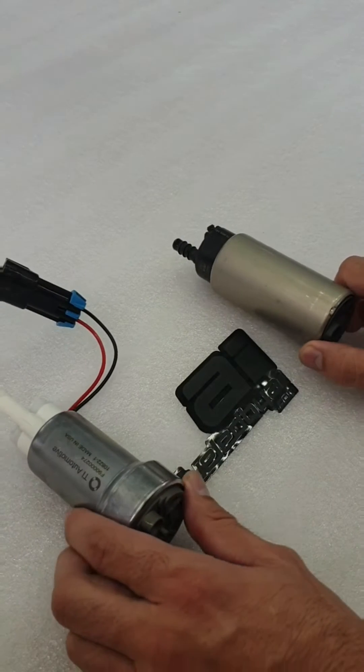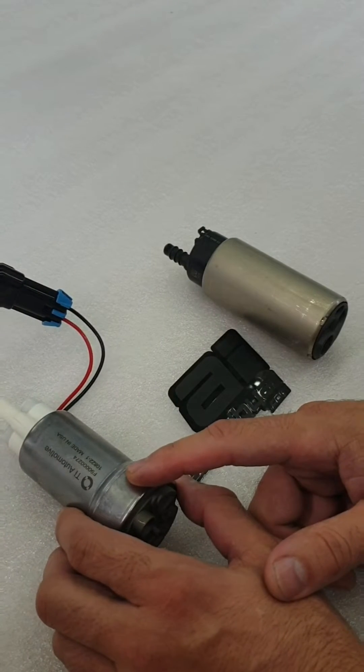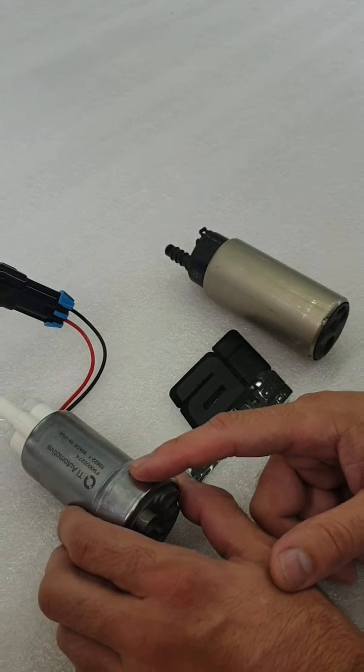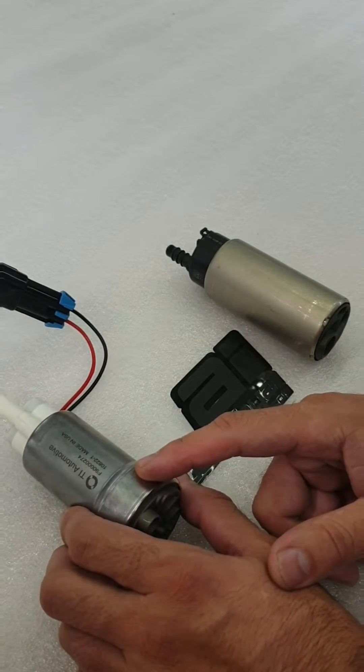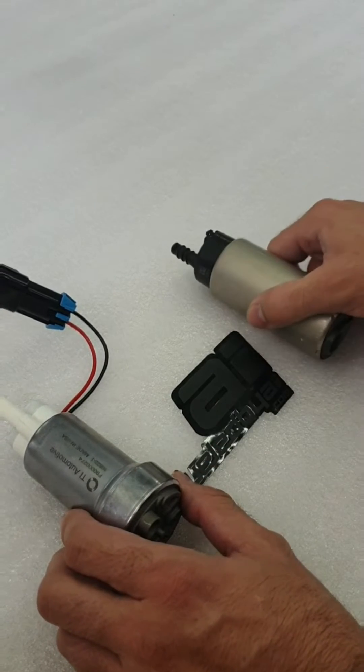Next up, this comparison will be a little bit more interesting. The pump on the left is the Walbro 535, serial number F90000295, versus the Bosch Motorsport BR540.